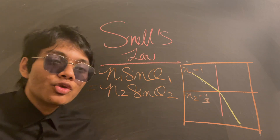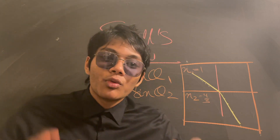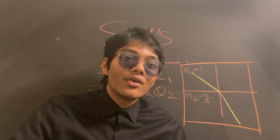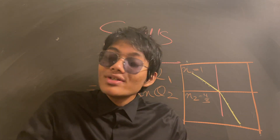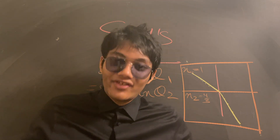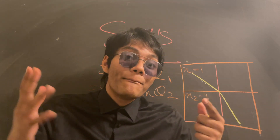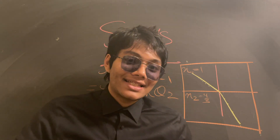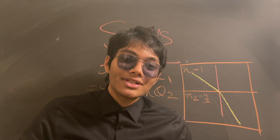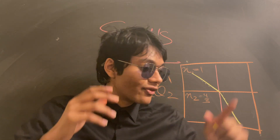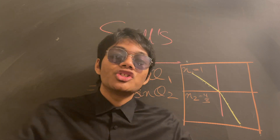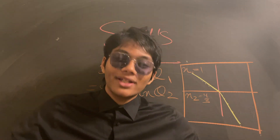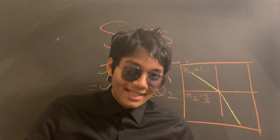Now you understand what refraction is, what reflection is, and how light travels in straight lines. You might be thinking: how is any of this related to billiards? I'll leave that for the next episode. Hopefully you learned how reflection, refraction, shadows, and broken pencils are all related. We'll see you in the next episode.